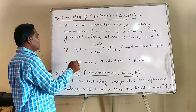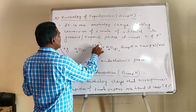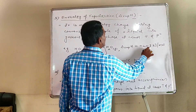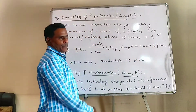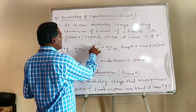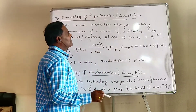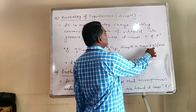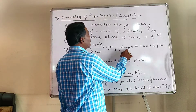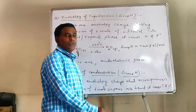For example, consider one mole of liquid water vaporized at 100 degree Celsius and one atmospheric pressure. The enthalpy change is plus 40.7 kJ per mole, meaning 40.7 kJ of heat is absorbed. And hence the enthalpy of vaporization of water is plus 40.7 kJ per mole.